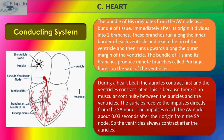During a heartbeat, the auricles contract first. When the SA node — the impulse generator — generates the impulse, both auricles contract first, meaning auricular systole takes place. This is because there is no muscular continuity between the auricles and the ventricles.